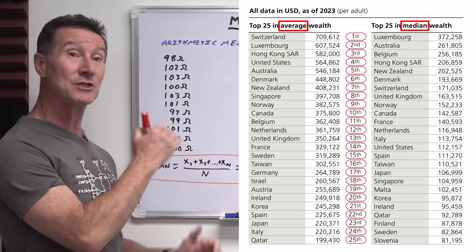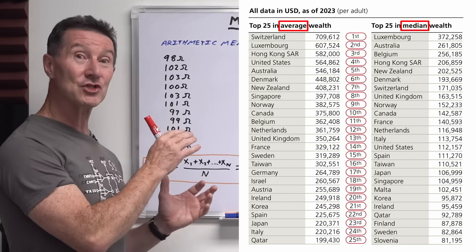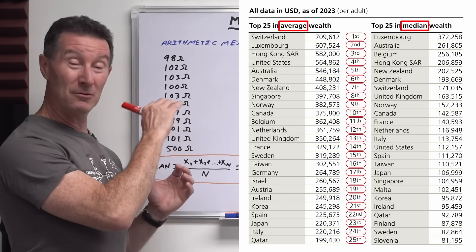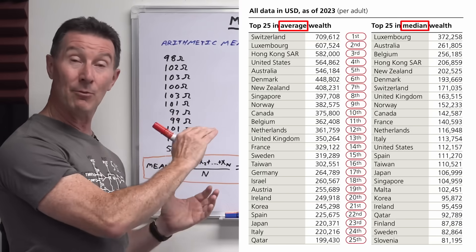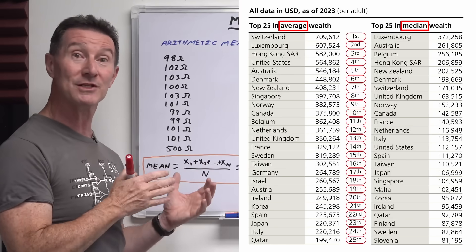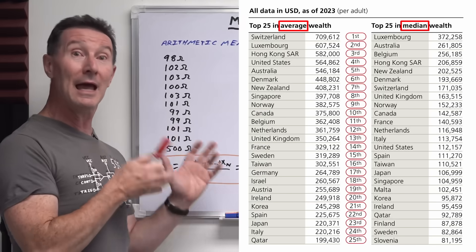So what that means when Australia jumped from number five up to number two, what it means is that the average Australian has a much higher real-world median worth than someone in the US or somebody in Switzerland. Why is that the case?